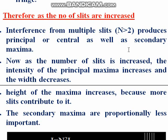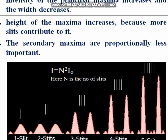From the above discussion, here are the important points. First, interference from multiple slits (N > 2) produces principal maxima as well as secondary maxima. Second, if the number of slits is increased, the intensity of the principal maxima increases and the width of the principal maxima decreases. Third, the height of the maximum increases because more slits contribute to it. Finally, the secondary maxima become proportionally less important.